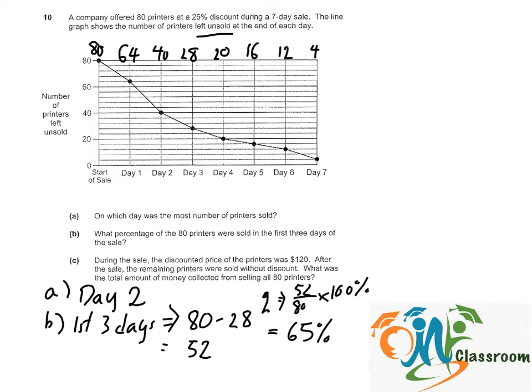For part C, during the sale, the discounted price of the printers was $120. So the discounted price is $120, which is sold at 25% discount. That will tell us that 100% minus 25% discount equals 75%. So 75% of the price is $120.